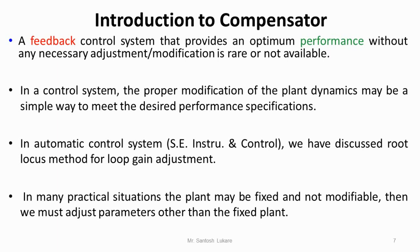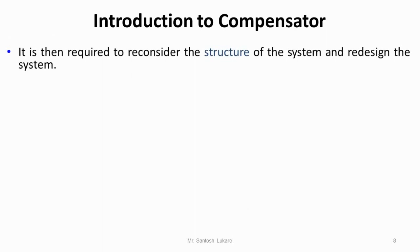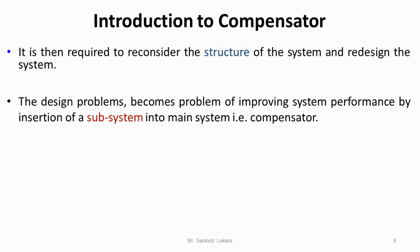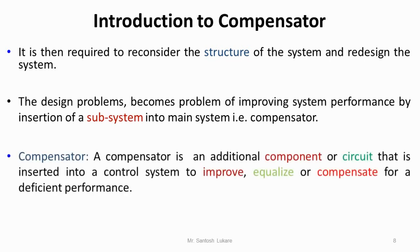Since we can't change the plant, it is required to reconsider the structure of the system and redesign it. We can consider the feedback control system with some additional component. The problem becomes one of improving the system performance by inserting a certain subsystem into the main system, and that subsystem is called a compensator. Basically, a compensator is an additional component or circuit other than the plant which is inserted into the control system to improve the plant performance, equalize the plant performance, or remove some deficiency present in the original plant's response.